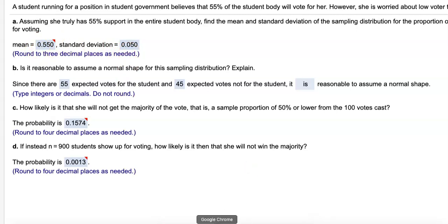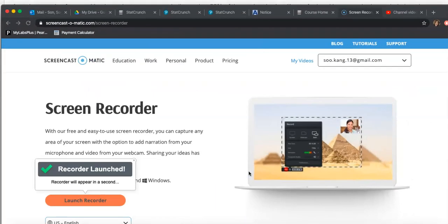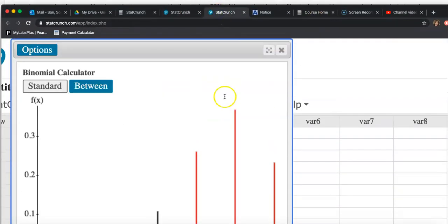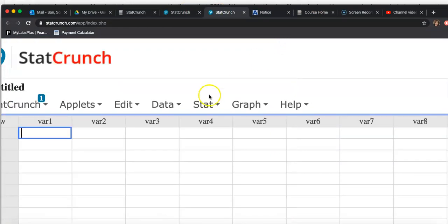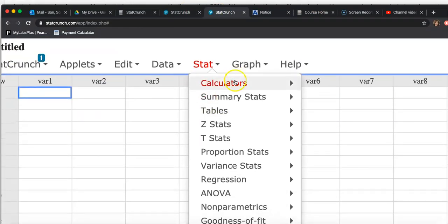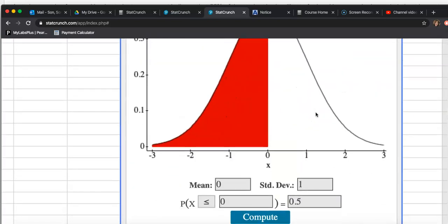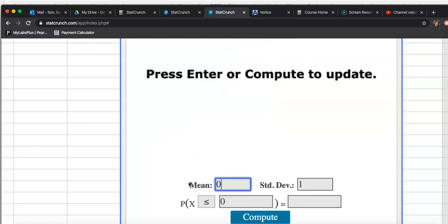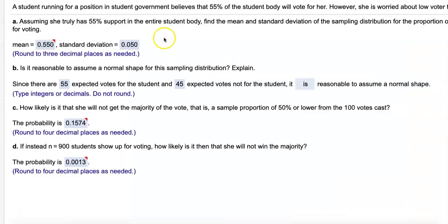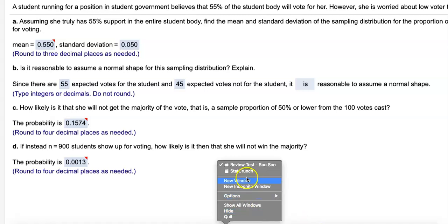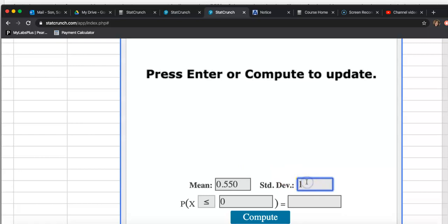Let's go to the calculator. I need my stat crunch. I was playing with binomial, but I'm gonna close that one and open up stat calculator and normal. In normal distribution calculator, type in that the mean is 0.550 and the standard deviation is 0.050.